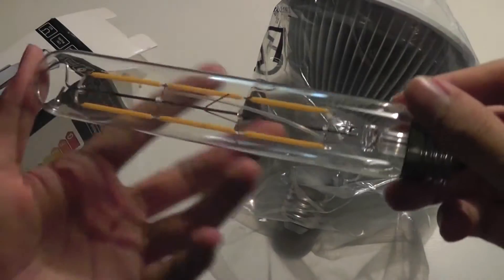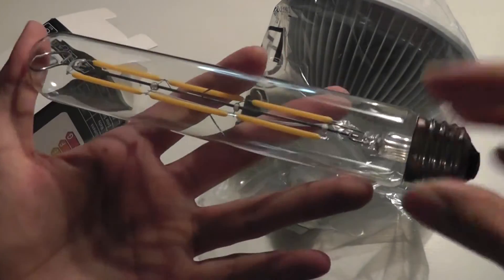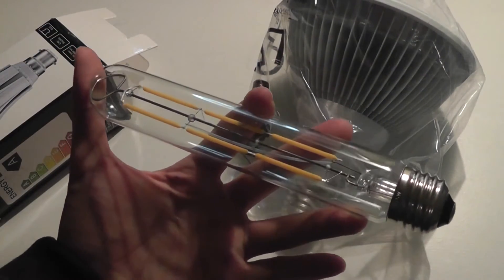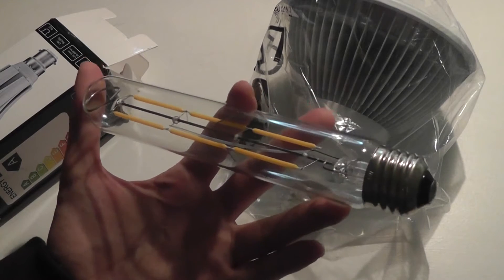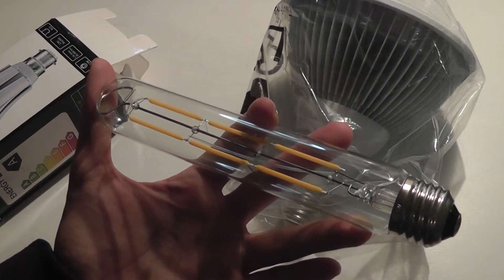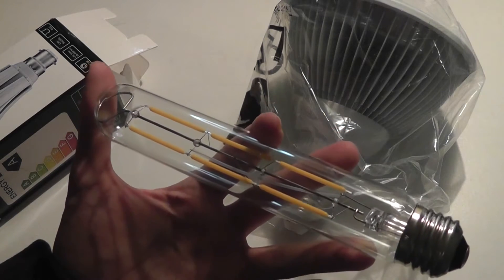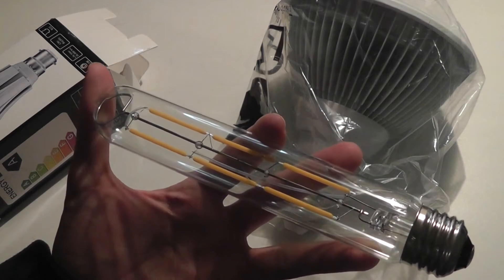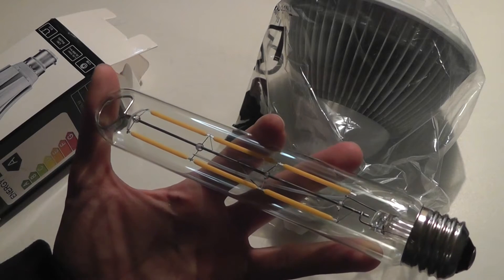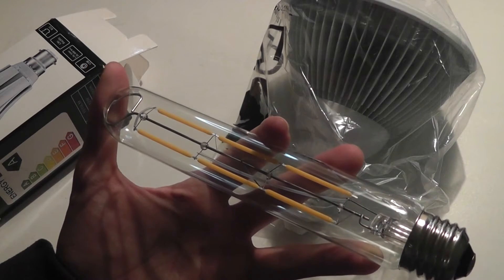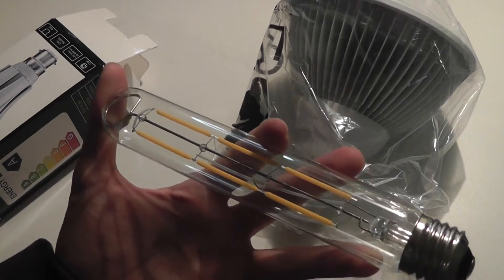Next here we have a more typical one that still uses a filament, and this particular company, links in the description below, specializes in these almost antique looking bulbs. If you're interested in vintage bulbs, this one can really add an interesting cast and glow to a room. It's really reminiscent of an actual candle, produces a very yellow warm glow, great for reading especially in the winter.